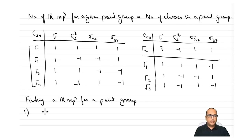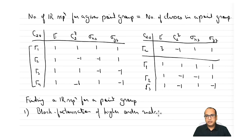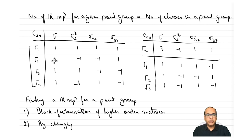The first method is to write down the complete matrices using a given basis set and then perform block factorization of the matrices. The second method is to change the basis sets — for example, going from xyz together to individual unit vectors, which directly yields 1×1 irreducible representations.